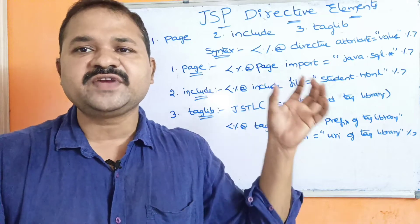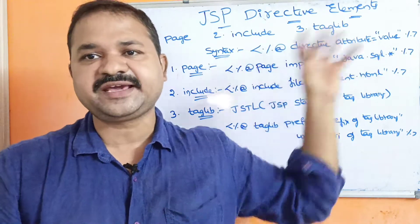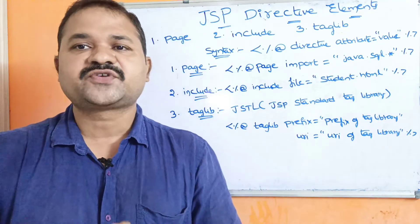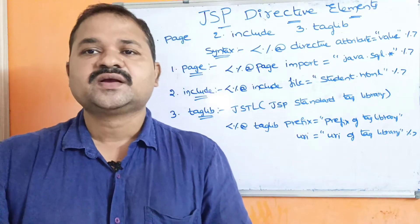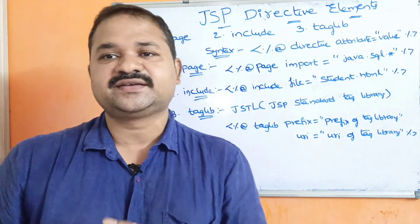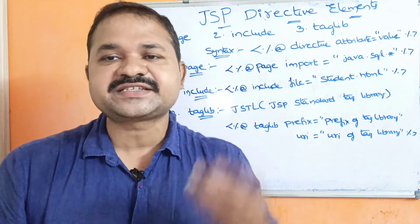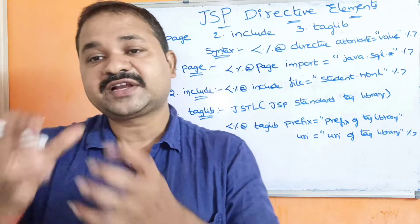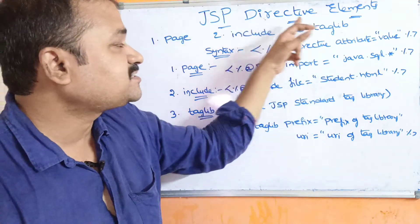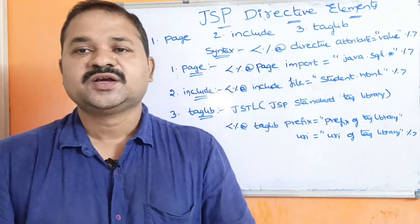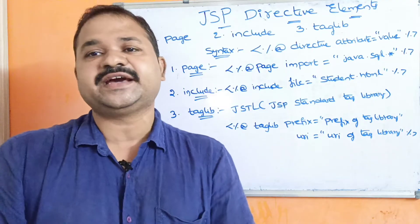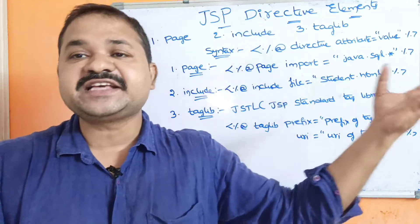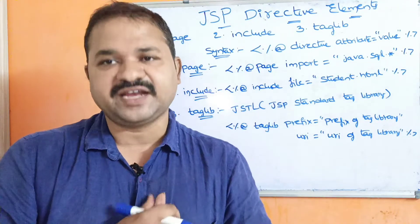Whenever we have written a JSP application and start the server, the translator first translates the JSP page into the servlet page. For that translation, JSP Directive Elements instructs the web container and web server regarding how to translate a JSP page into the servlet.